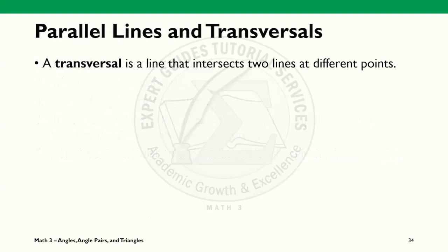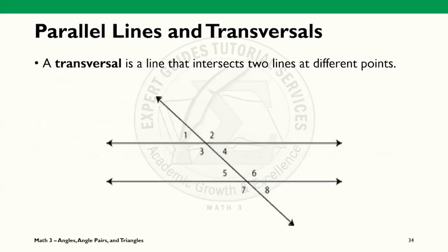Moving on with our discussion, transversals are lines that intersect two lines at different points. When we intersect parallel lines with a transversal, we can derive a lot of angle properties.